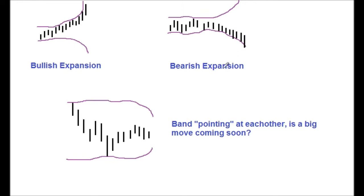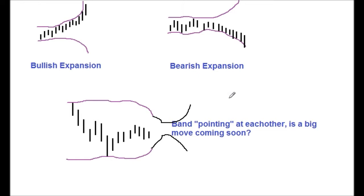This is a bearish expansion where the Belinga Bands will run away from each other but the price will go down. When you get the bands pointing towards each other, it often means consolidation is occurring and you'll probably get a big move. They will consolidate, maybe move for a little bit, and then expand — and you'll have an explosion where the price takes off either on the upside or the downside.